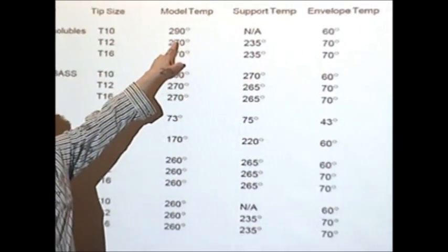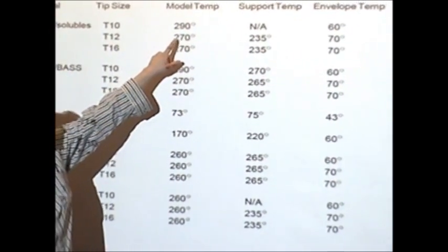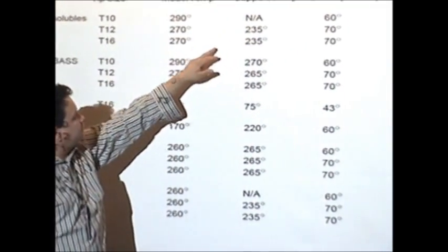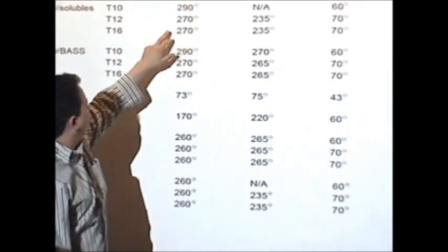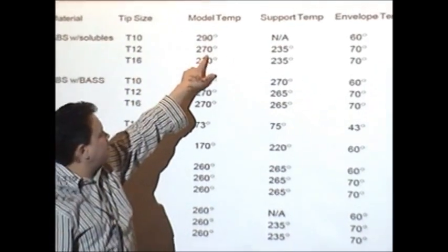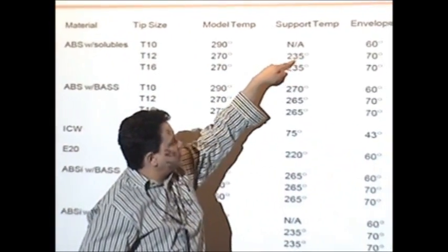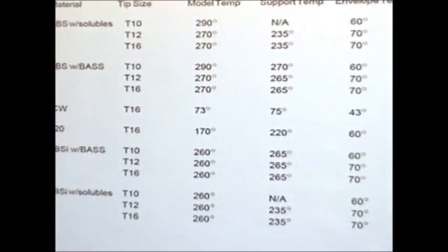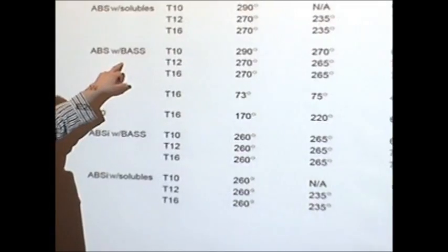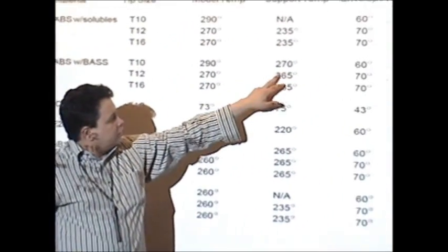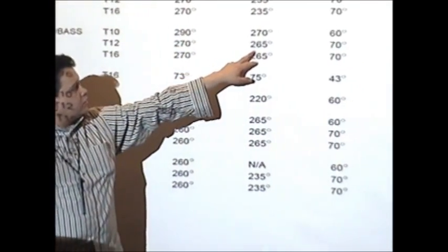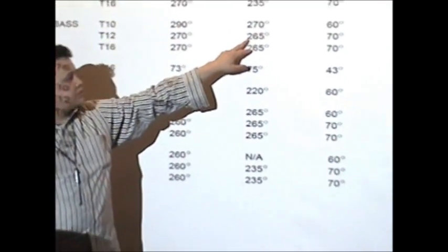If you use a tip 10, you have to use a 290 Celsius model temperature. And you're not available to use a waterworks temperature, waterworks material temperature. But you see, you set it to 270, you use a T12, you set the model temperature to 270, and the waterworks support material is 235. And if you're not going to use waterworks soluble support, just the breakaway support, you have to use, once again, it's T12, ABS, 270. But you use support temperature of 265.